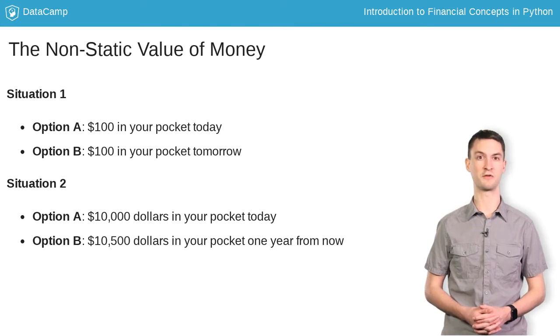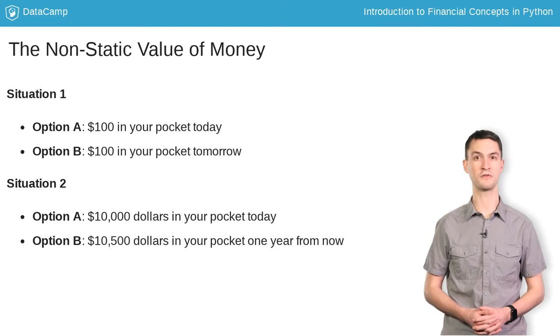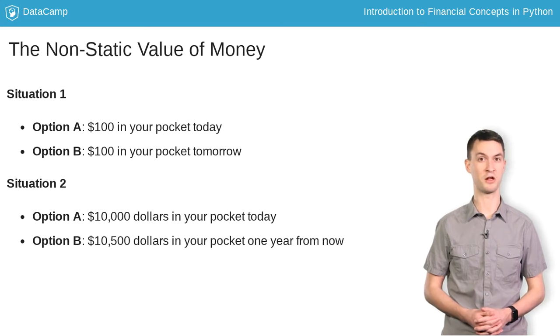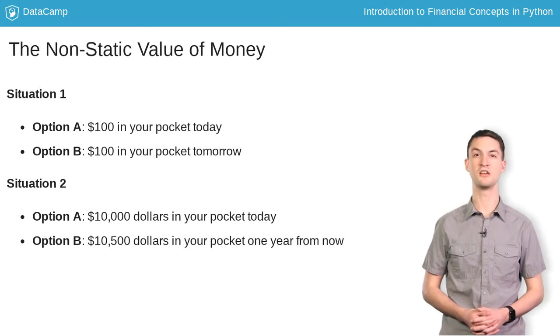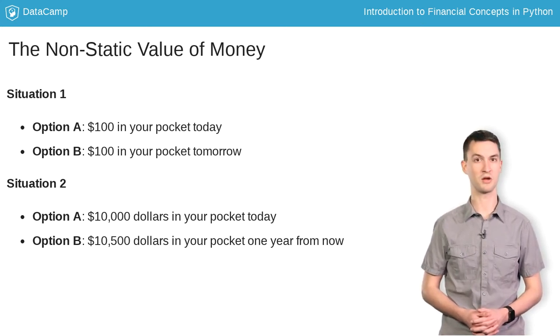The reason why it's difficult to make a decision is because you're actually comparing two different types of values, even though both offers are in dollars. The $10,000 is in present value dollars, and the $10,500 is in future dollars. You can't compare them directly.